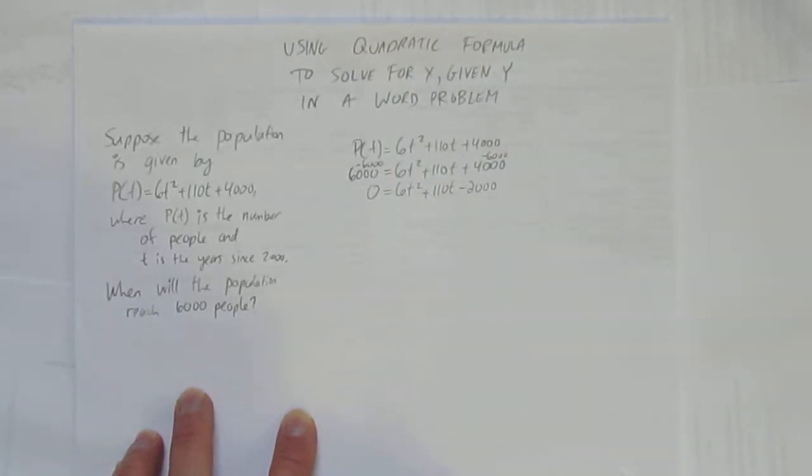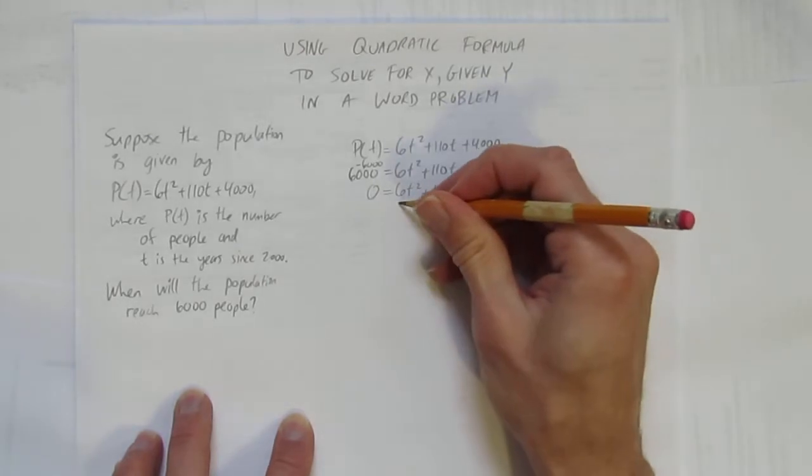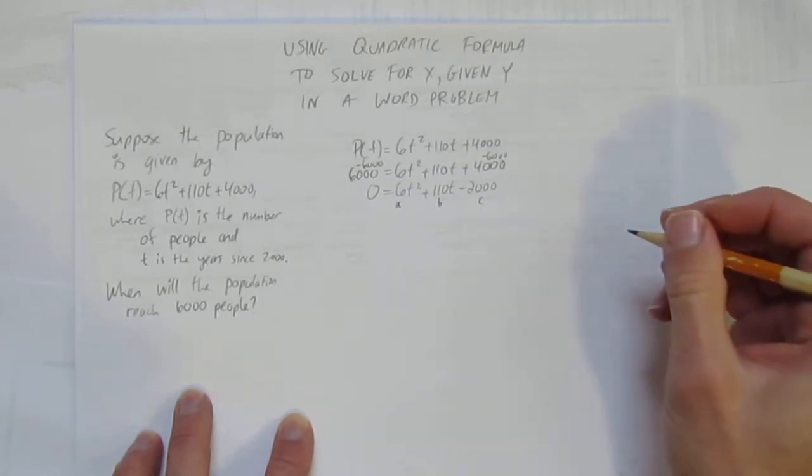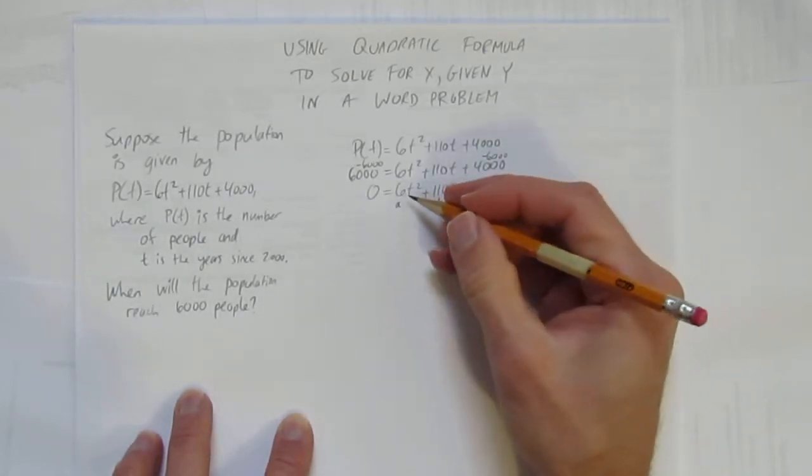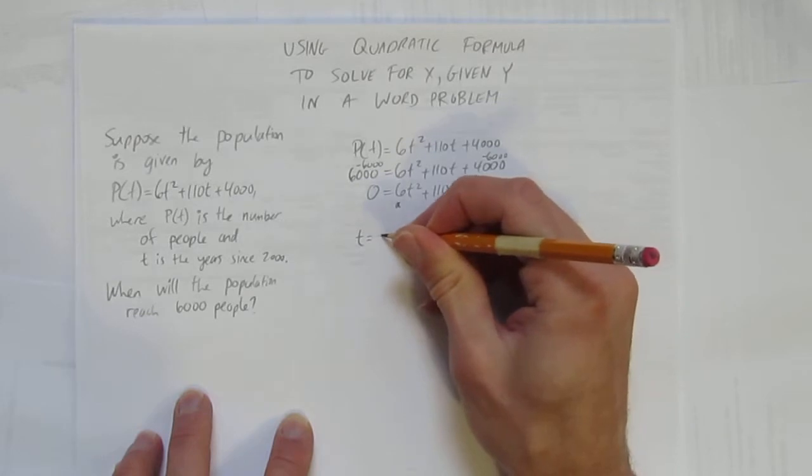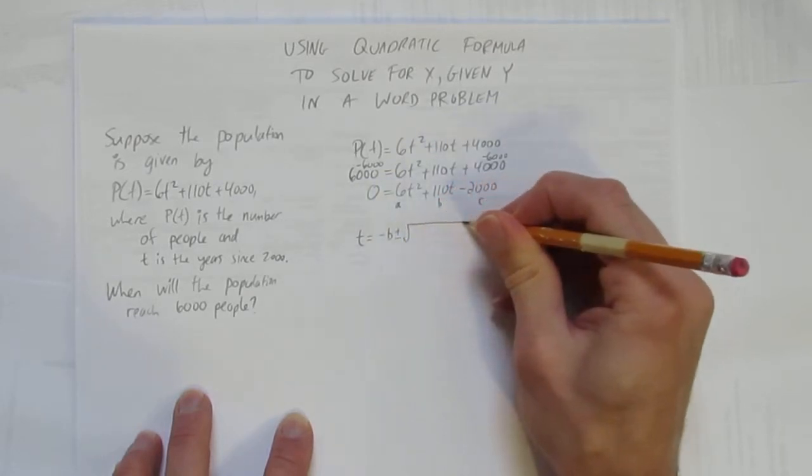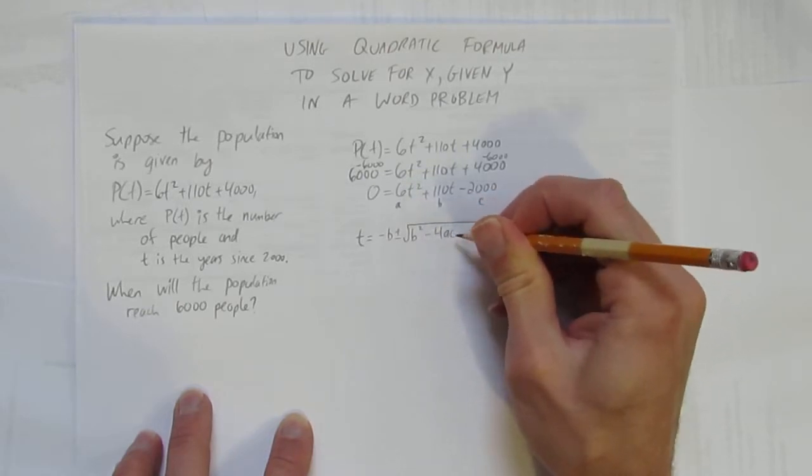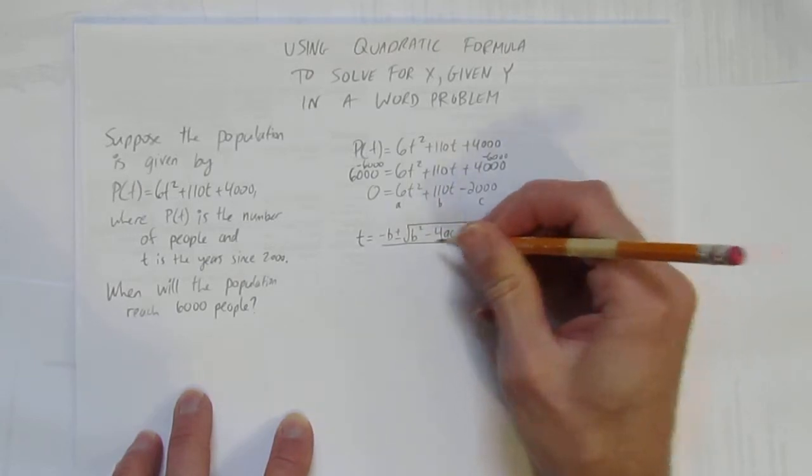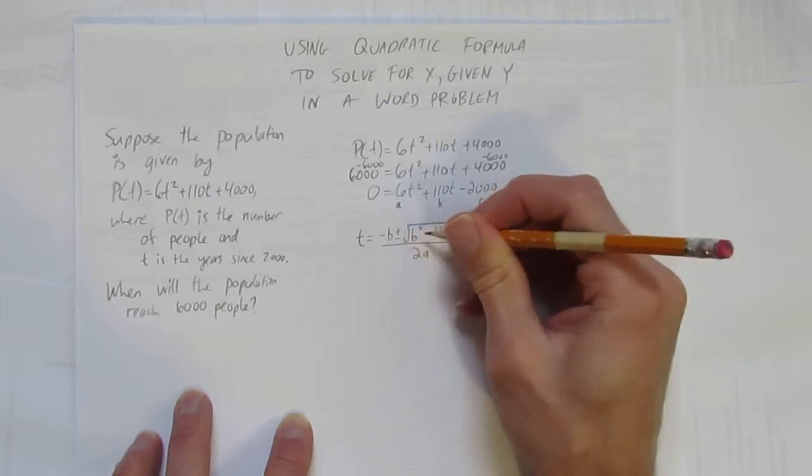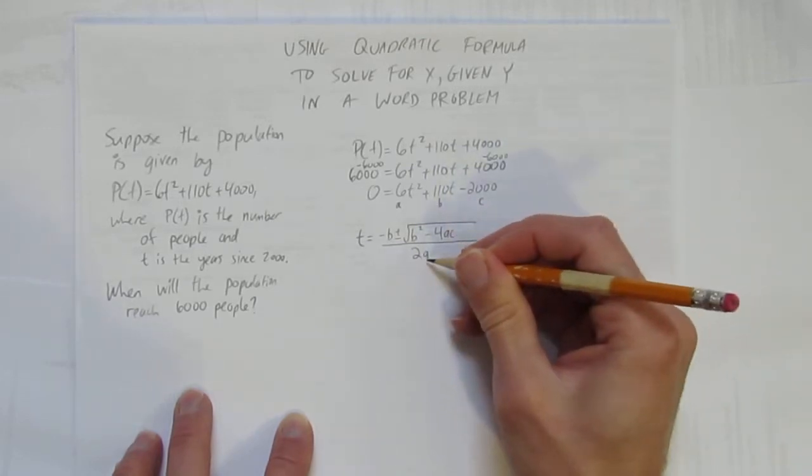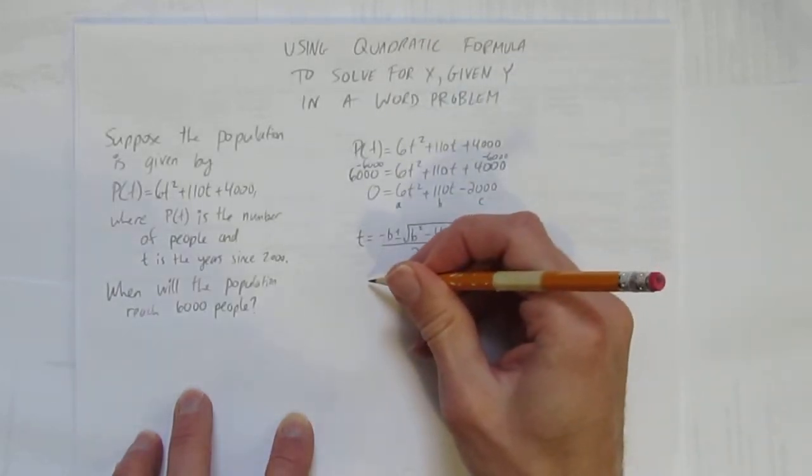Now I'm going to use quadratic formula. You don't have to, but I like to. I identify my a, b, and c values. Remember, in this particular equation it's not an x value, it's a t. So t equals negative b plus or minus the square root of b squared minus 4ac all over 2a. There are videos on quadratic formula you might want to watch before this one.